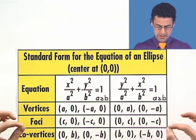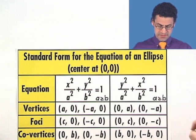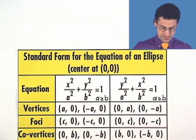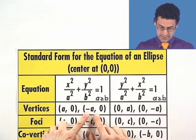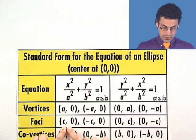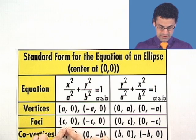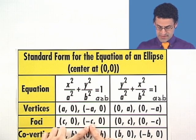The vertices, which are just sort of the points that are furthest away from the very center and the points that are closest away, the furthest points away are going to be given by a zero and negative a zero. And the foci, the points that we were just talking about, are going to be located at c zero, negative c zero.